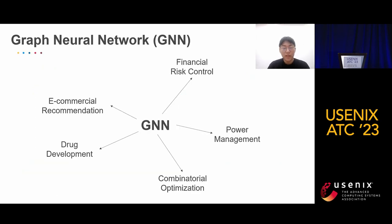Graph Neural Networks, GNNs, are a class of deep learning algorithms. This kind of algorithm learns the low-dimensional embedding used to capture structure and attribute information of graphs. GNNs have been successfully applied in many real-world applications, such as recommender systems, power management, and risk control.